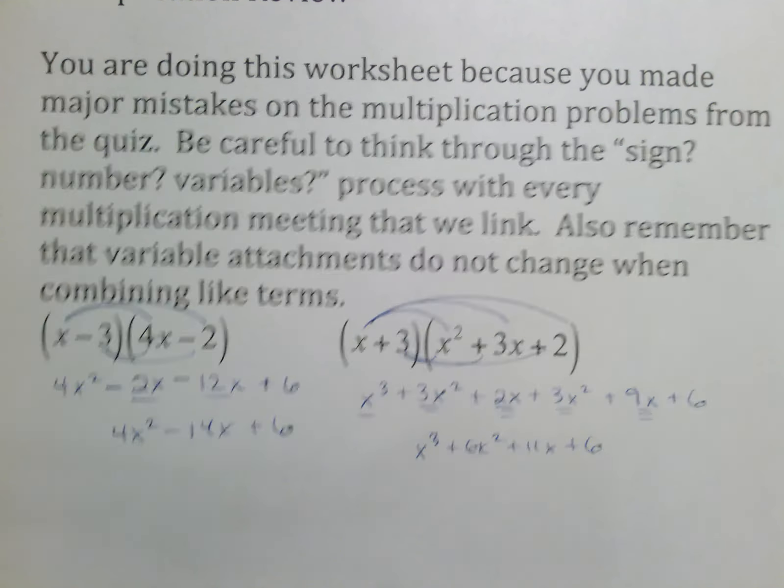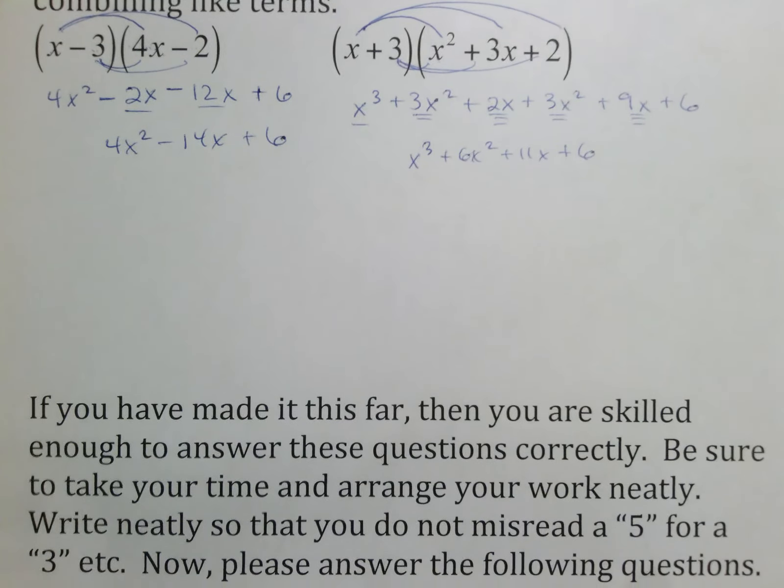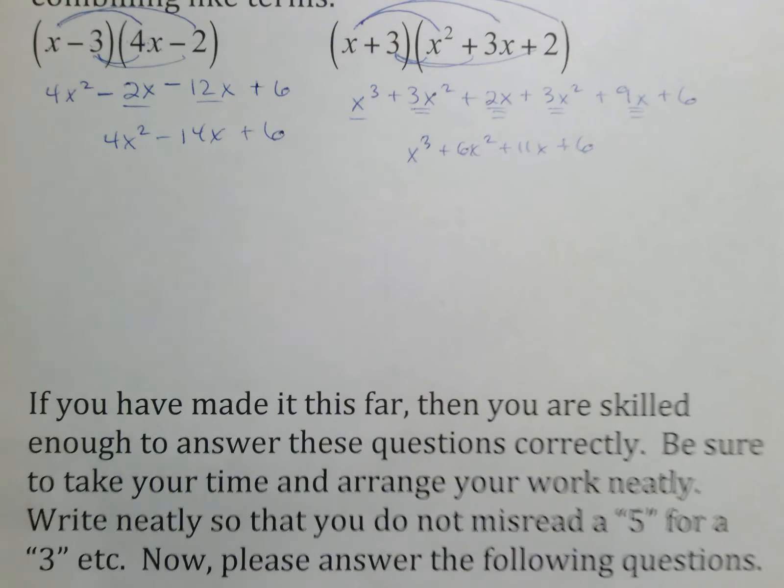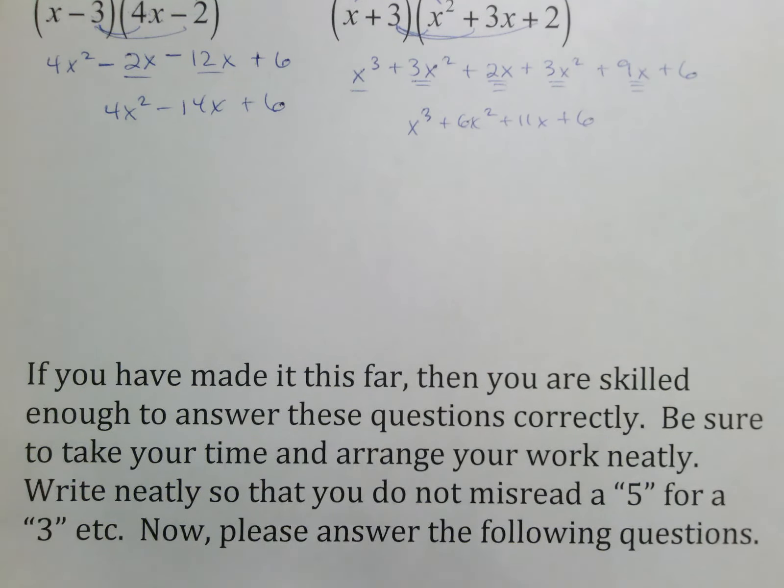Alright. And as it says here on this sheet, if you've made it this far, you are skilled enough to answer these questions correctly. And you typically miss them because you either rush or you don't arrange them neatly. Some people write your numbers in a weird way or you don't really take your time when you're writing your numbers and you confuse a 5 for a 3 or a 2 for something else. And so just make sure you are taking your time through this.